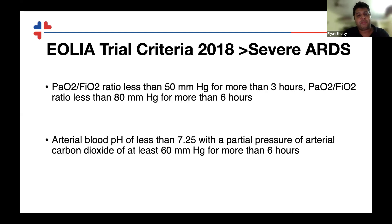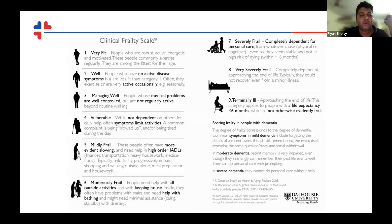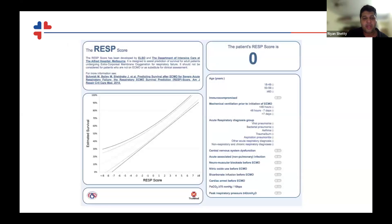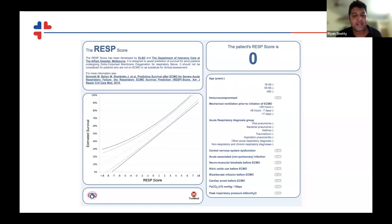We also use a clinical frailty scale — never mentioned in ECMO literature — but it helps when we have very elderly patients and makes it easier to explain to colleagues and patients why we should not offer ECMO. The RESP score was developed at Alfred hospital together with ELSO. It is not an indication score — it is a prediction of survival for adult patients who are already on ECMO for respiratory failure. I want to make sure none of you confuse it with an indication tool.